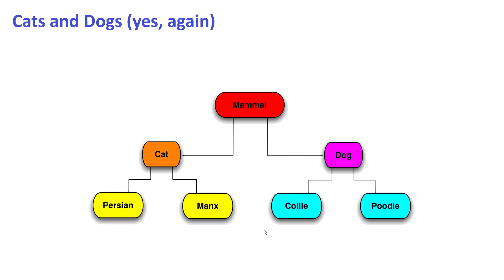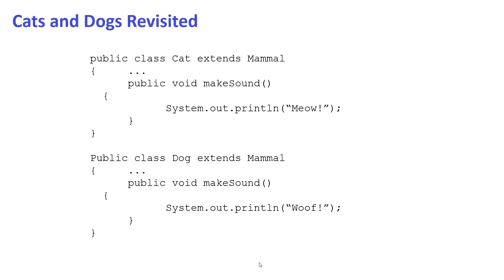Revisiting the example that started our inheritance discussion: we have a Mammal class as the parent, with Cat and Dog as subclasses. From there you can add breeds for Cat and Dog, creating a deeper inheritance hierarchy — as shown in the diagram here.